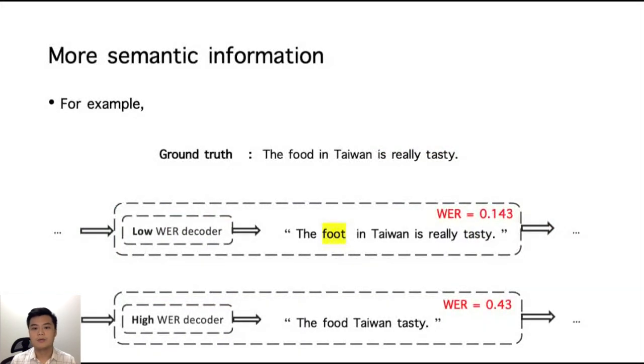For example, a ground truth sentence is: the food in Taiwan is really tasty. Then we have two recognition cases with different word error rates. The first is a low word error rate recognition result: The food in Taiwan is really tasty.